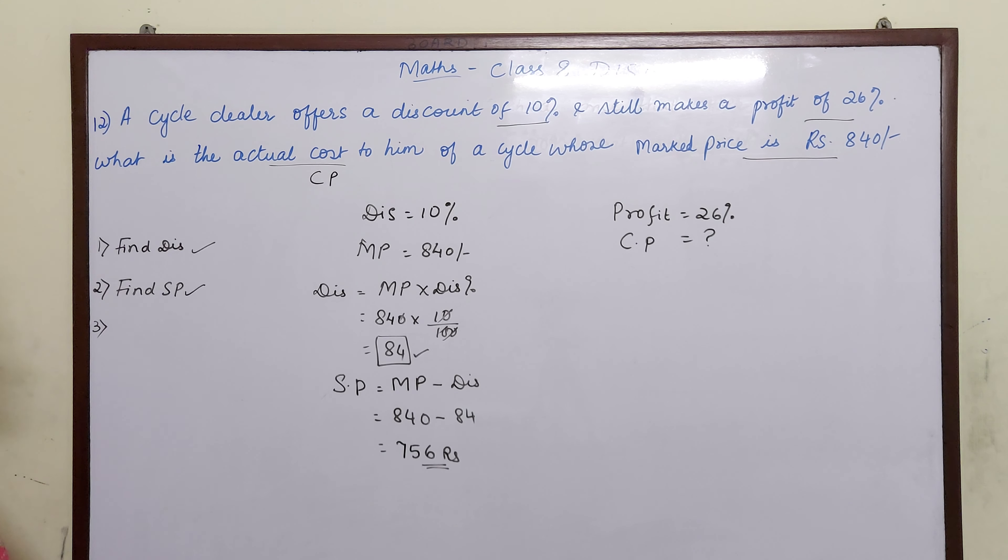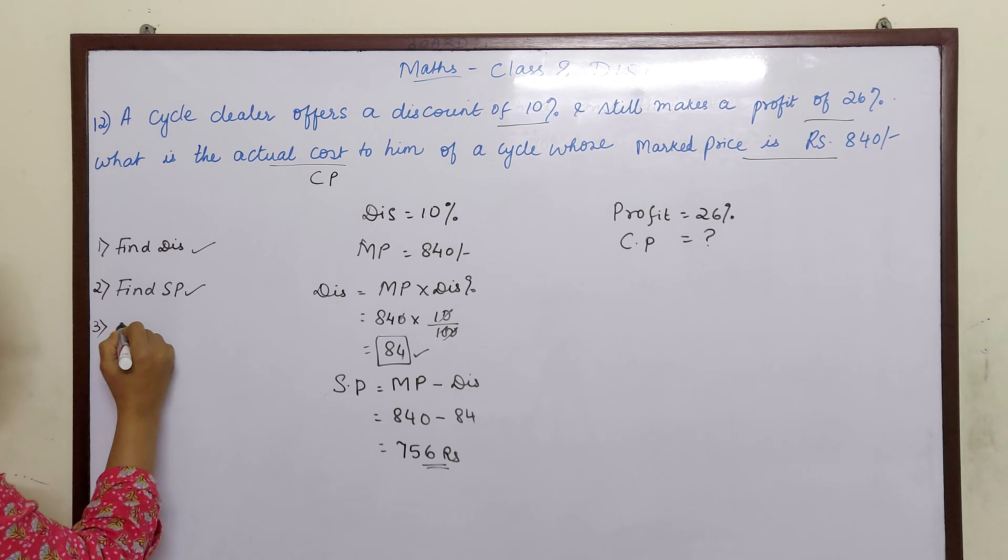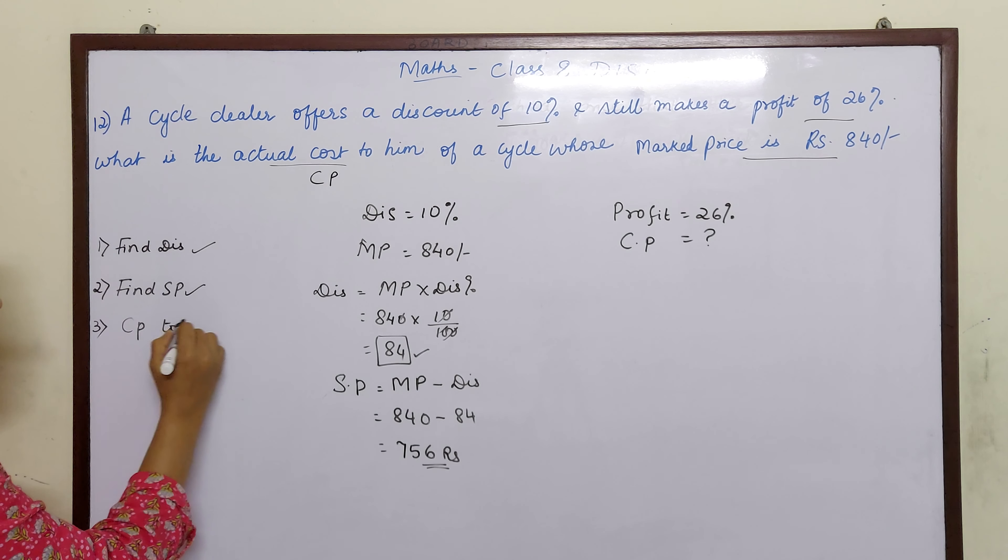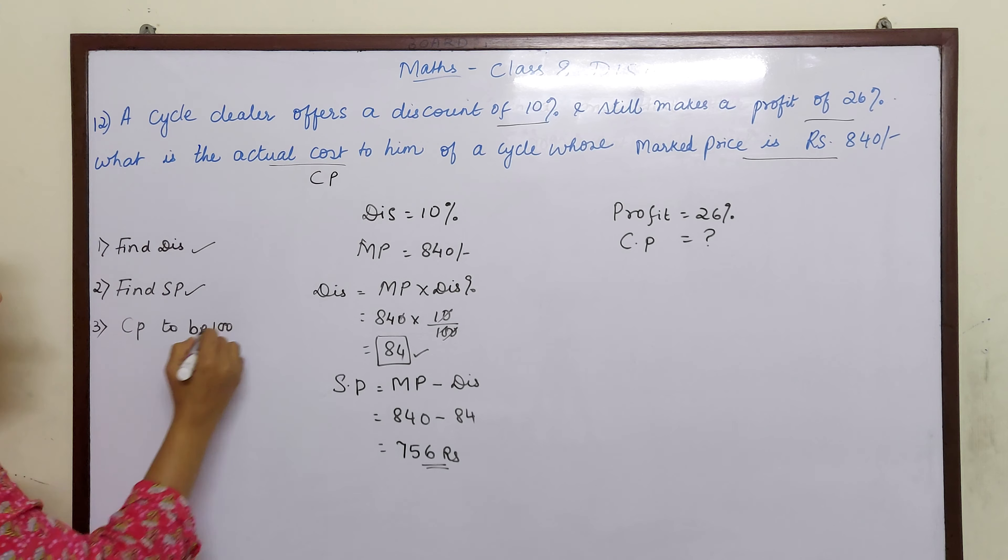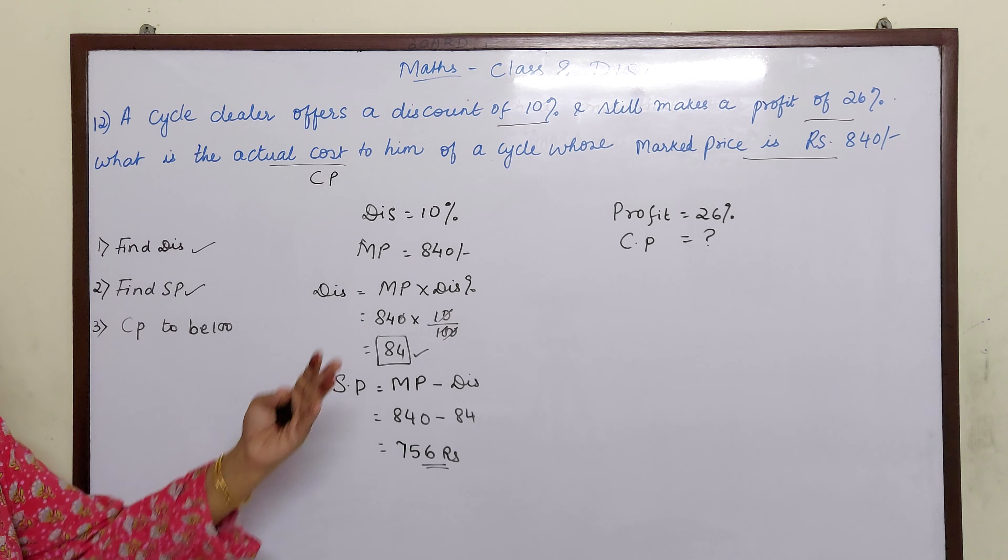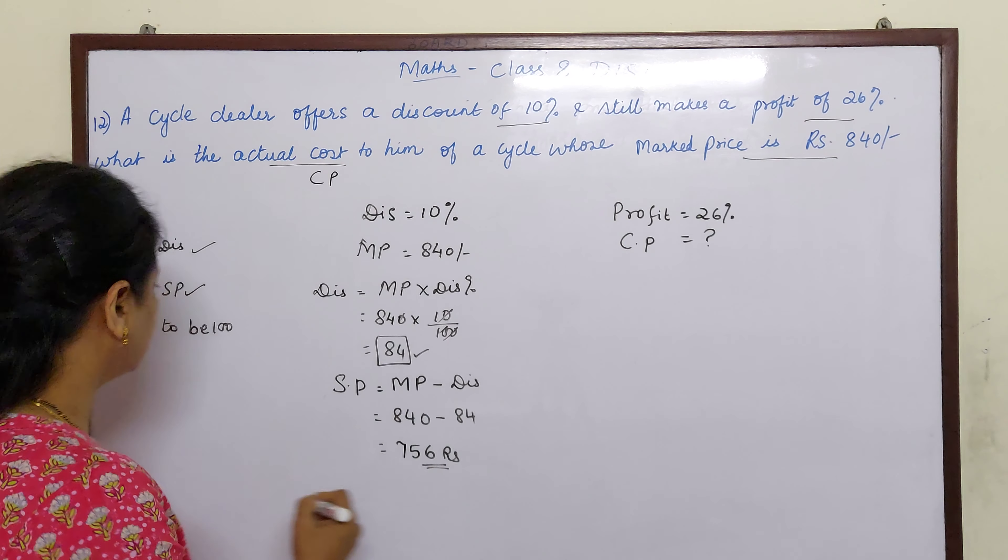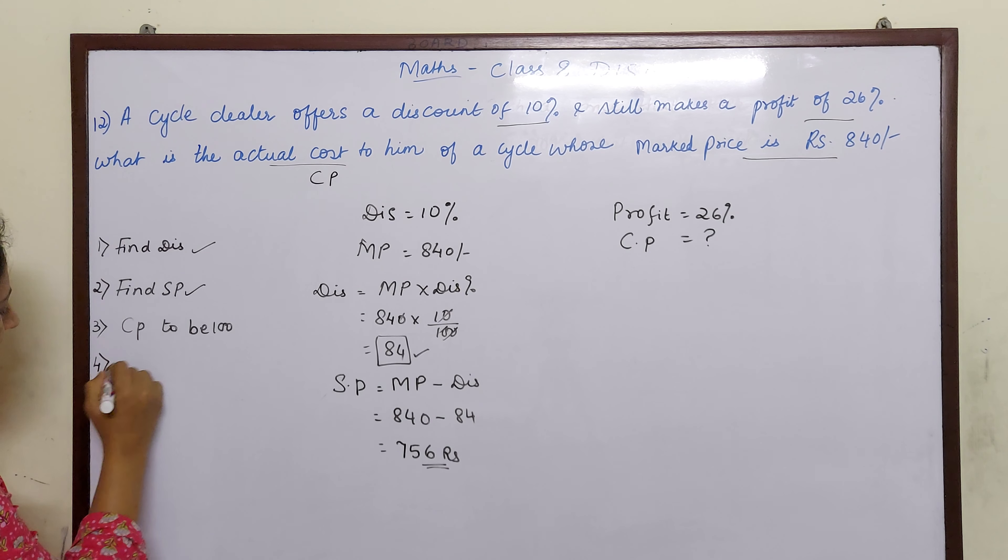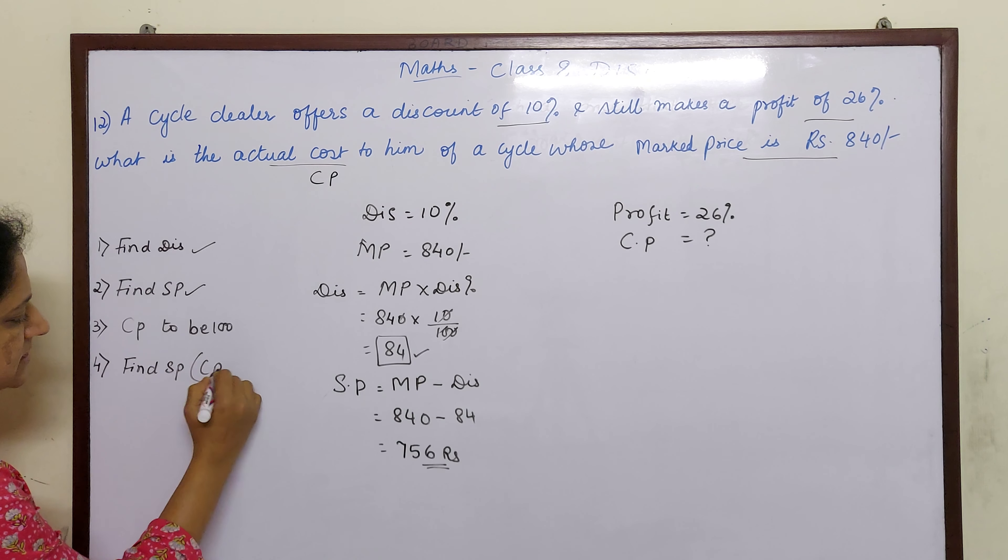Now what will be our third step? We will take a cost price to be 100. With the help of cost price being 100, we will go on with the assumption and find the selling price. So next step will be find selling price with the help of cost price plus profit. We will get two selling prices.